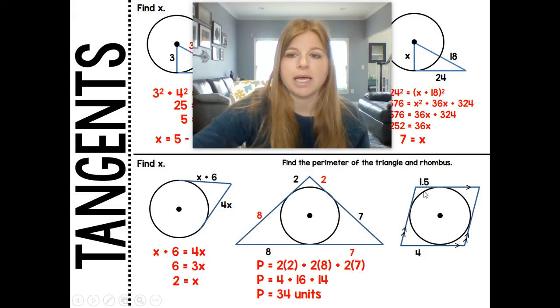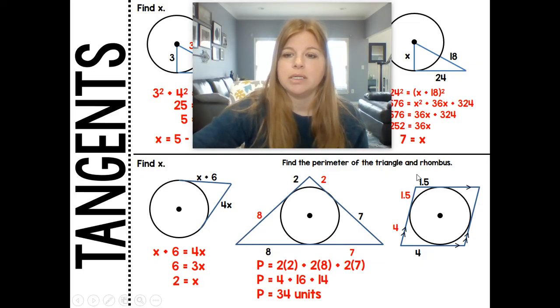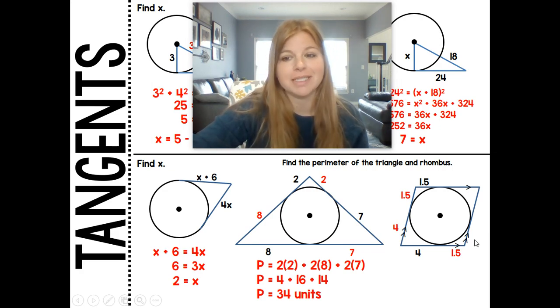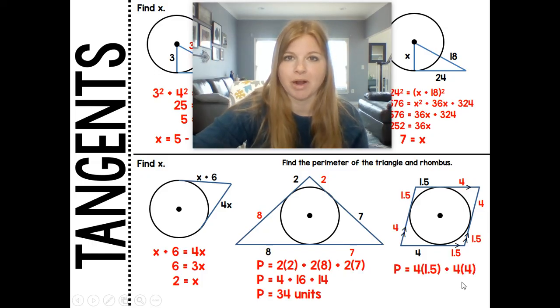Last one. If this is 1.5, then this is 1.5. If this is 4, then this is 4. Now, it does say it's a rhombus, and we know a rhombus means that all 4 sides are congruent. So if this is 4, then the remaining, since it's got an equal up to the same as this, 4 and a 1.5, that would be 1.5. And if this is 1.5, based on tangent rules, this segment would be 1.5. And because it's a rhombus, and they have to be equal sides, this would have to be 4, and then that would be 4.